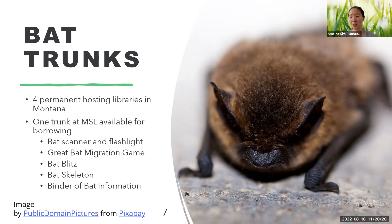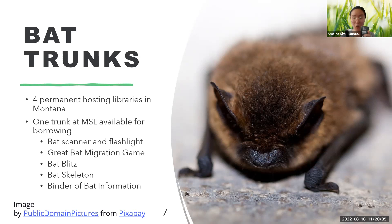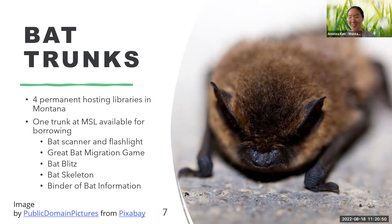If you'd like the list of materials, put your email in the chat and that will help me with follow-up. So that is the bat scanner and the flashlight — this is for if you want to host a bat walk in your community. You can reach out to FWP for recommendations on where to go for finding bats, and you can always try it out on your own first before you take people.